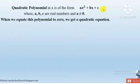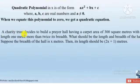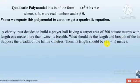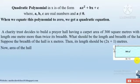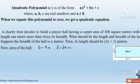Let us study a situation to understand how we form a quadratic equation. A charity trust decides to build a prayer hall having a carpet area of 300 square meters, with length 1 meter more than twice its breadth. If the breadth of the hall is x meters and length is 2x plus 1 meters, the area is length into breadth.